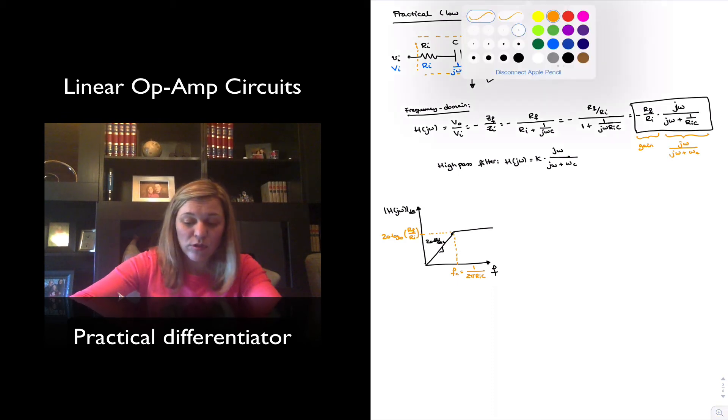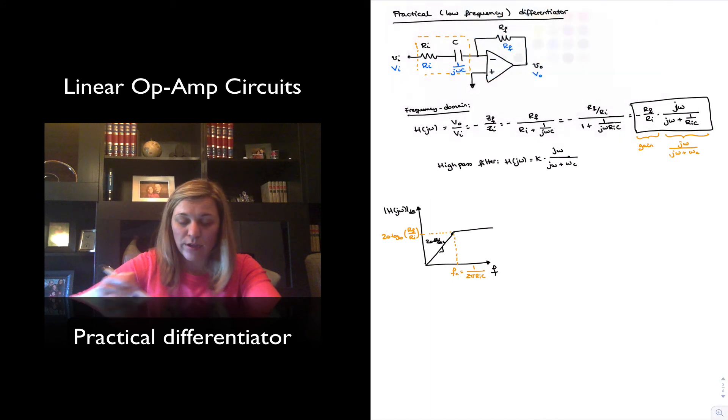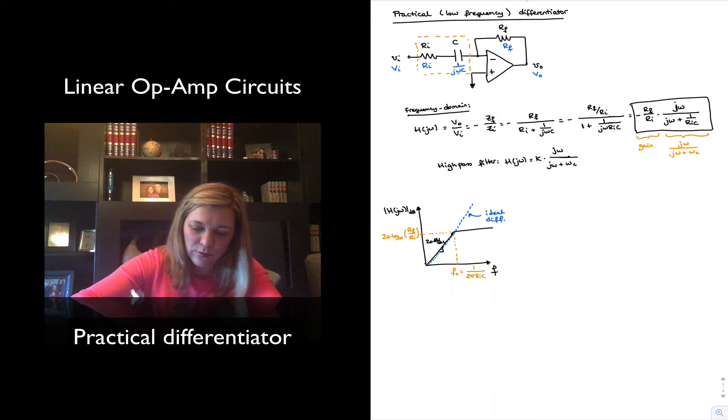Again, it resembles the graph for an ideal differentiator. The ideal differentiator was just increasing and unbounded. This will be the ideal differentiator circuit. The black line will be the practical or low-frequency differentiator.